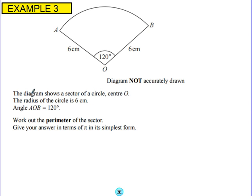Example three then. So the diagram shows a sector of a circle, centre O. The radius of the circle is 6 centimeters. Angle AOB is 120 degrees. Work out the perimeter of the sector.